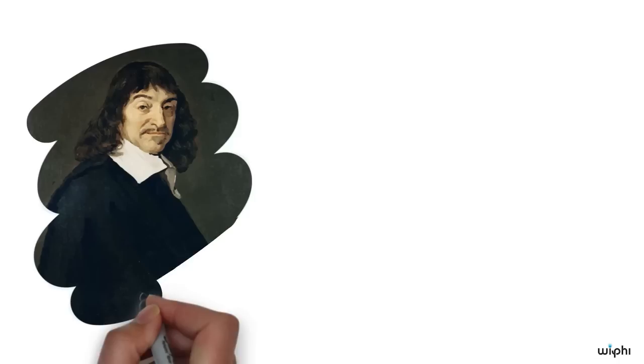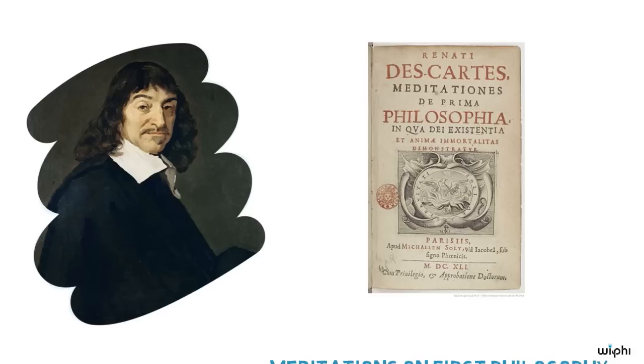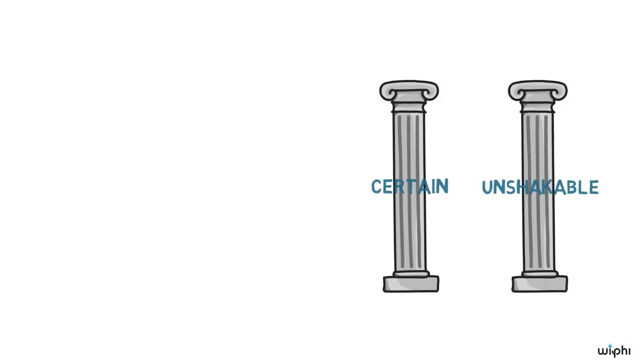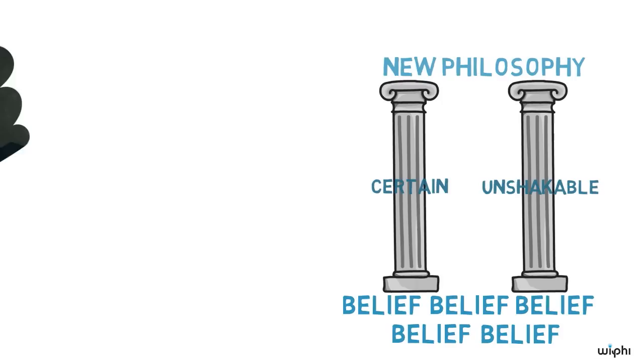Let us now finally turn to Descartes' attempt to establish a firm foundation for his new philosophy. He carries out this attempt most extensively in his Meditations on First Philosophy. As we said, he wants to find absolutely certain and unshakable beliefs that he can build his new philosophy upon.